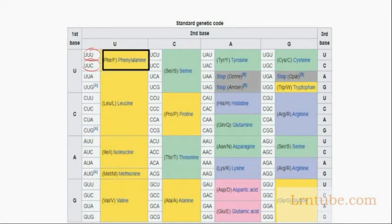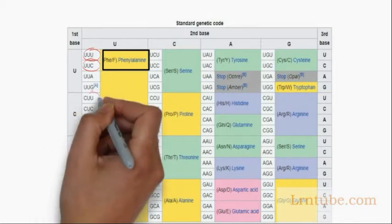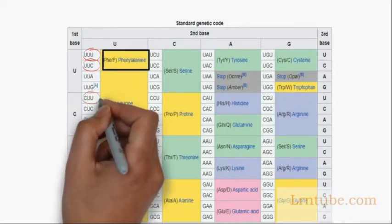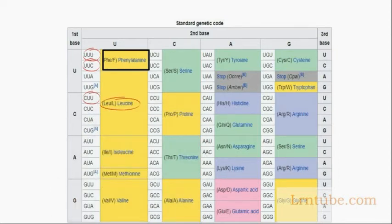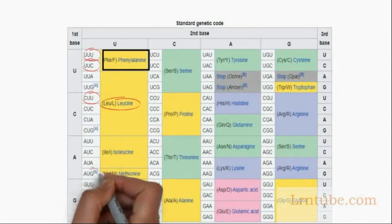Whenever you see the codon CUU, it will always represent leucine. CUU cannot be any other amino acid apart from leucine, and UUC cannot be any other amino acid apart from phenylalanine. So once you see a particular codon, it represents a particular amino acid — anything other than that is wrong.